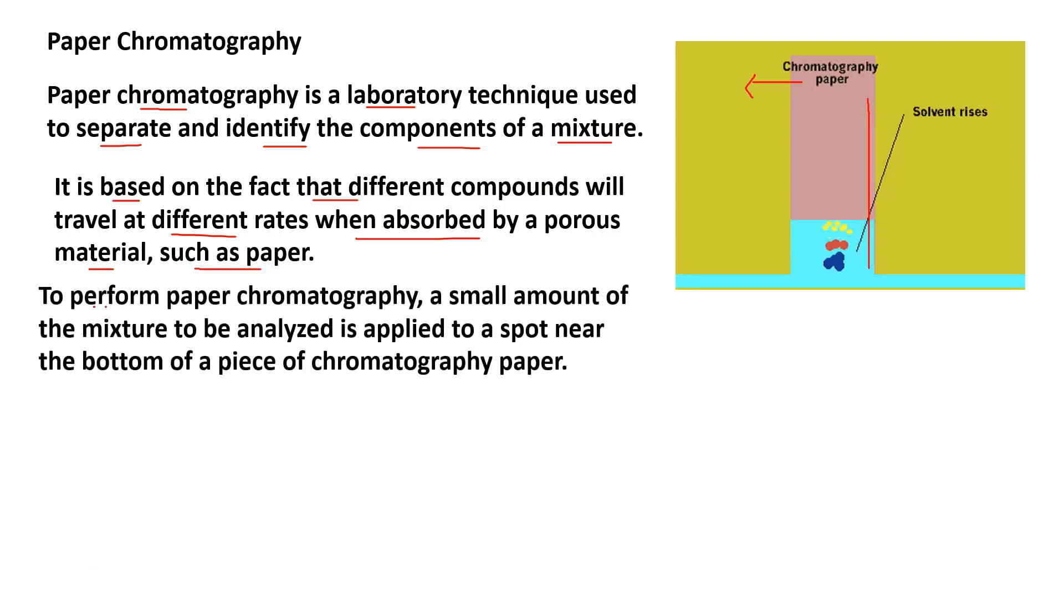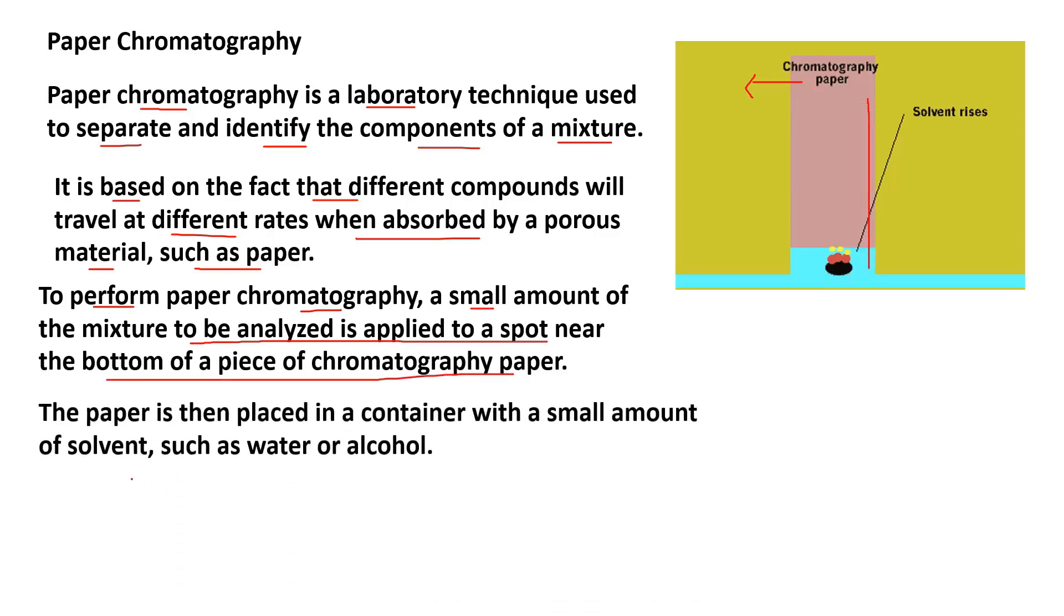To perform paper chromatography, a small amount of mixture to be analyzed is applied to a spot near the bottom of a piece of chromatography paper. The paper is then placed in a container. Then we will add a small amount of solvent such as water or alcohol.